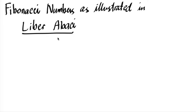Liber Abaci — some call it the book of calculations. But if you want to translate it literally, it is translated as the book of Abacus, which was a little bit misleading because it's actually a complete treatise on mathematical and algebraic methods on problems highlighting the Hindu-Arabic numerals. The author of this book is Fibonacci — Leonardo of Pisa, famously known as Fibonacci. And this is one of the first books that strongly advocates and uses this Hindu-Arabic numeral system.